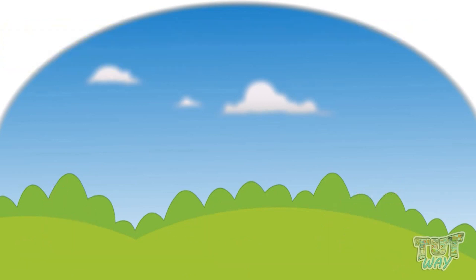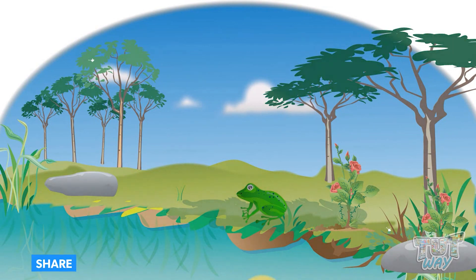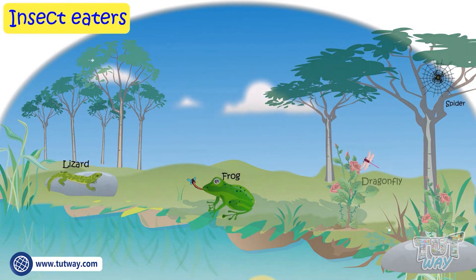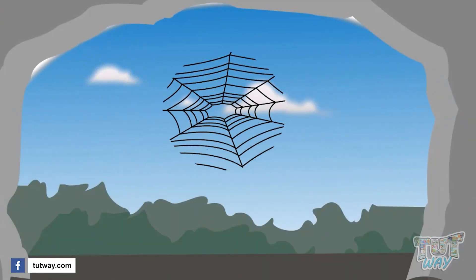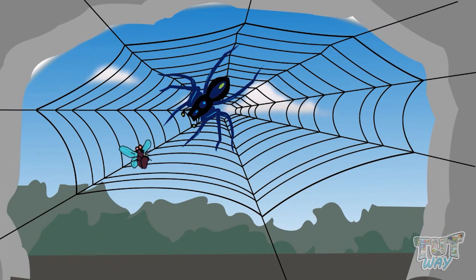Some animals have a sticky tongue. They use their sticky tongue to catch insects for their food. These animals are called insect eaters. Lizards, frogs, spiders, dragonflies, and ladybugs are examples of insect eaters. A spider can trap an insect in its web — once an insect gets trapped, it becomes food for the spider.